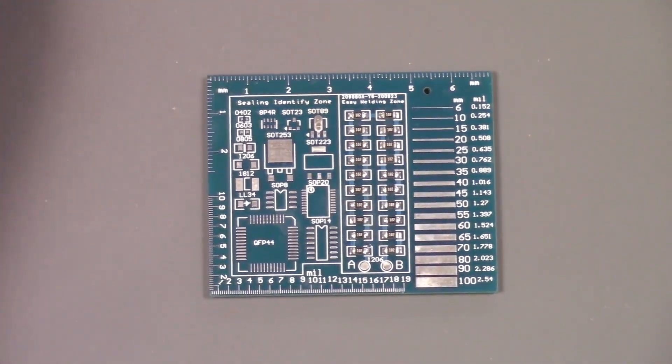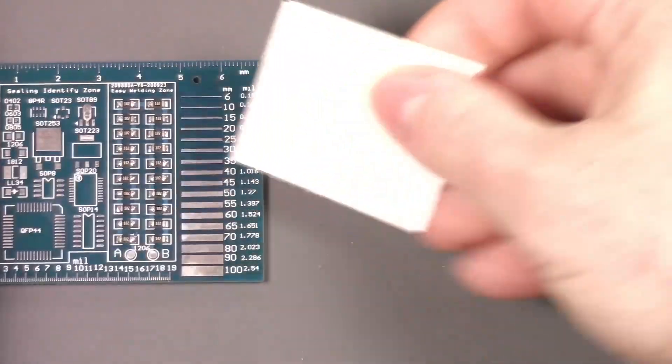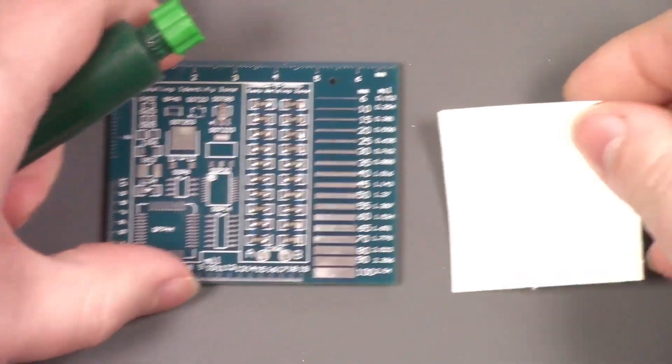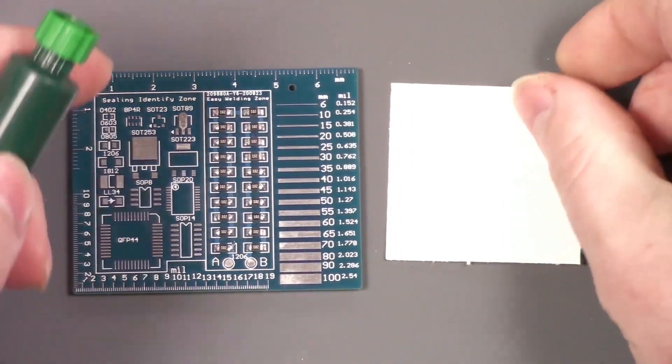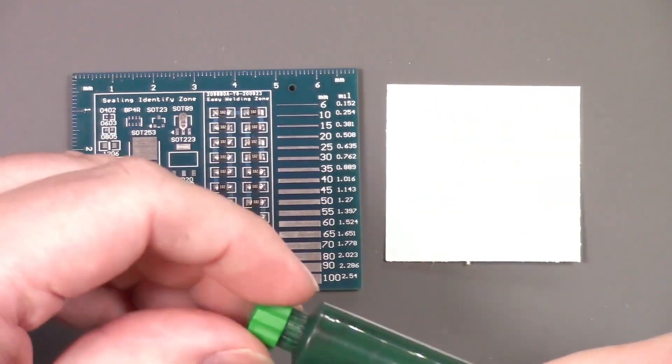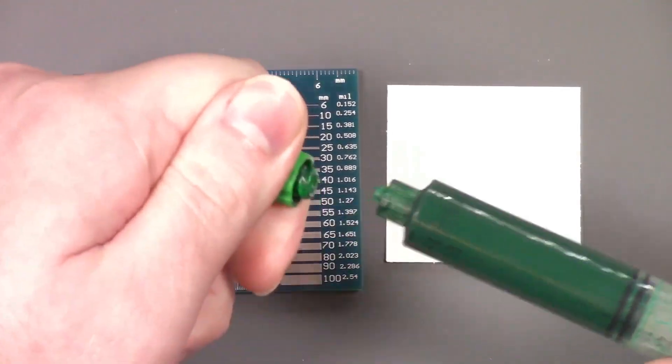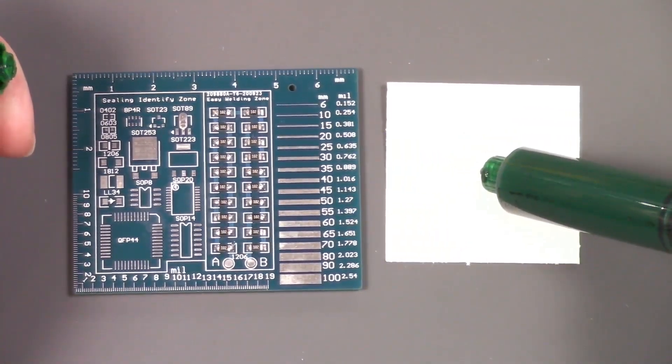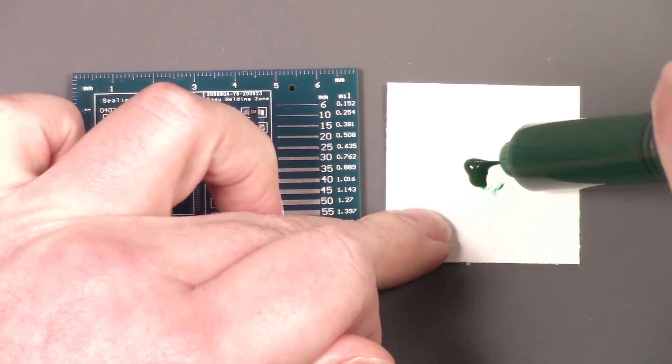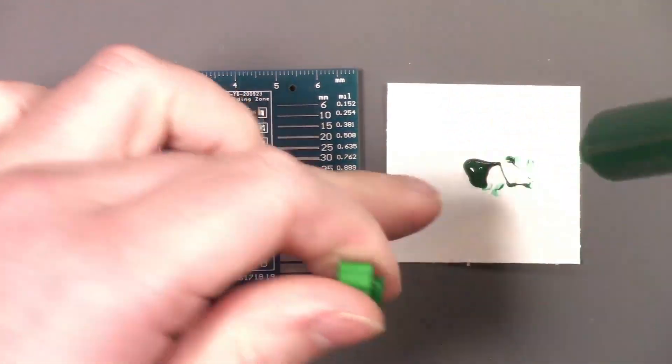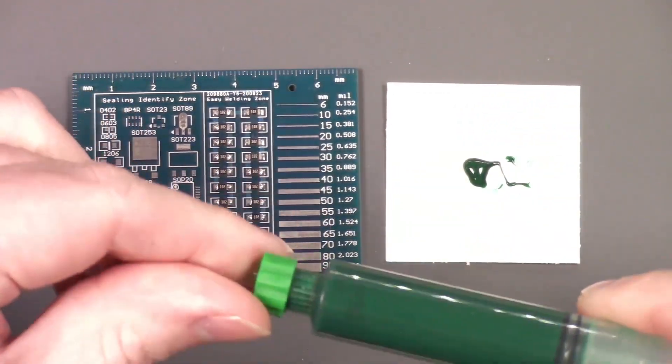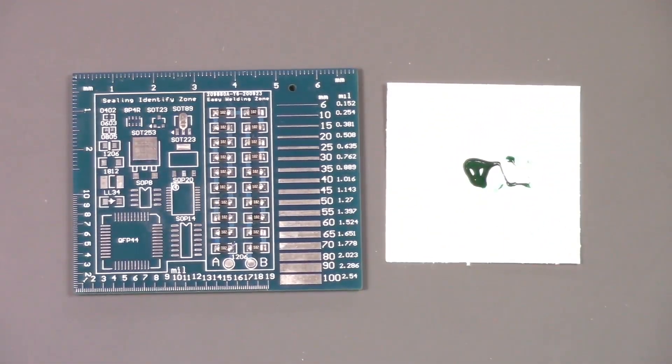And I'm going to take some UV solder mask here. I'm going to take a little piece of paper, put a little bit of UV solder mask on it, seal it back up.